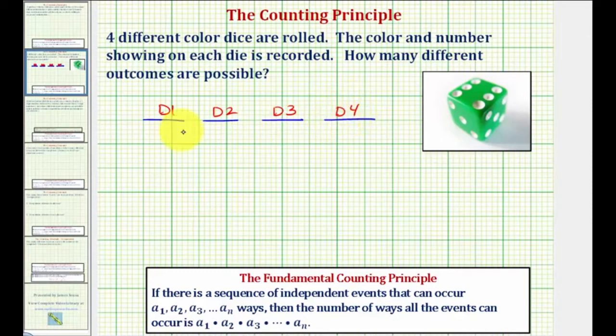Again, each of the die have a different color. If they were all the same color, and we could not tell them apart, it would change the type of problem.